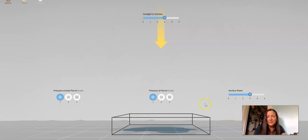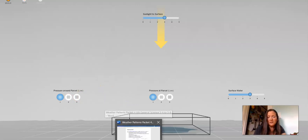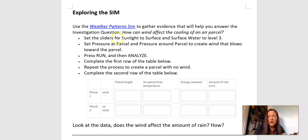All right, here's our sim. So we have our sunlight to surface, right? We have our surface water. And then we now have these pressure. Pressure at air parcel and pressure around air parcel. So let's see what we're supposed to set our sim at. So it looks like our sunlight to surface and our surface water are going to be at level three. All right. And our pressure, we're just supposed to set our pressure to create some wind. Okay. And then we're going to press run and analyze. So then let's see what we have here. We want some wind versus some no wind. Okay, so I see that we're going to run two tests, one with wind and one without wind.